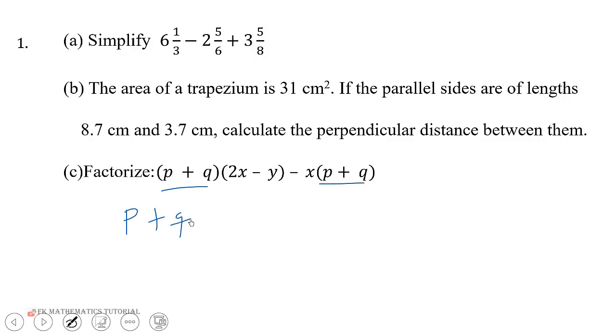Factorize, so p plus q outside, then we are left with 2x minus y here, then we are left with minus x here. So we group the terms. We have this being equal to p plus q, then if we come here we have 2x minus x.